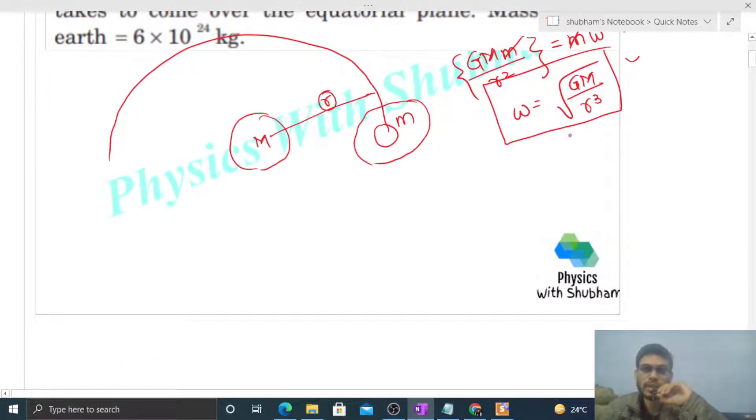Now we have to find out the value of small r, and we already know the value of omega for the satellite because omega for the satellite is same as the omega for the Earth. And Earth's omega is simply 2π divided by time period.